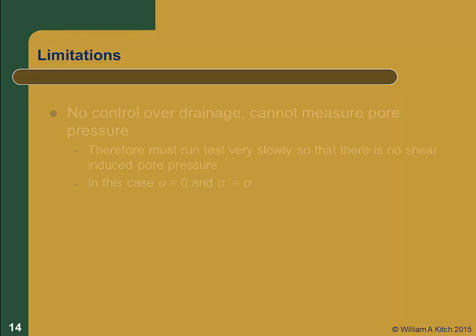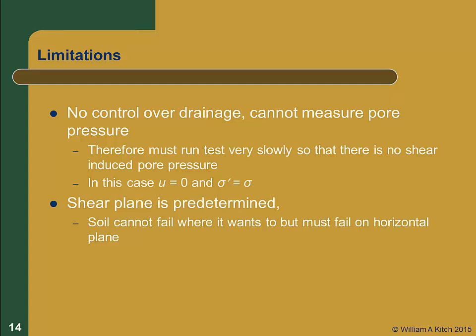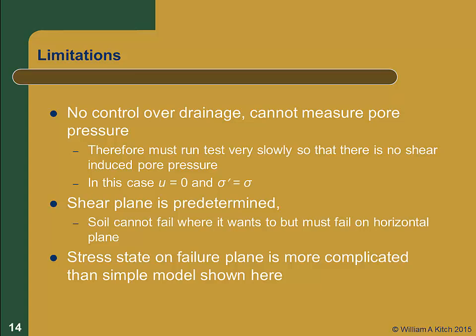There are a number of limitations to the direct shear test. These include the following. There is no control over drainage in the specimen, and we cannot measure pore pressures during the test. Therefore, the only way we can know what is really going on is to run the test very slowly so that any excess pore pressures that might be generated can dissipate. In this case, there will be no excess pore pressures, and the effective stress will be equal to the total stress. In this test, we force the soil to fail on a predetermined failure plane, which is always horizontal. This may or may not be the weakest plane in the soil. The actual stress state in the failure zone is much more complicated than the simple model we assume in our test.